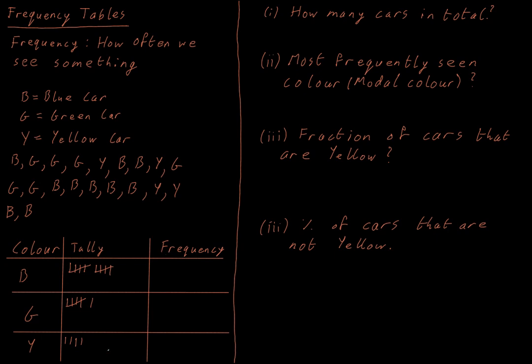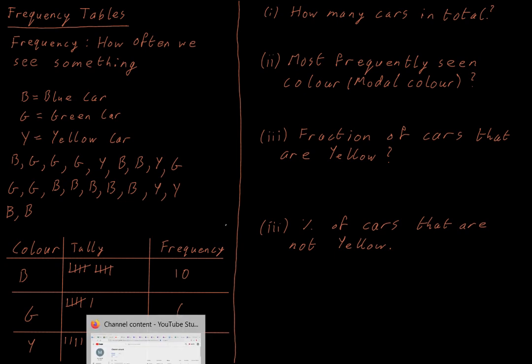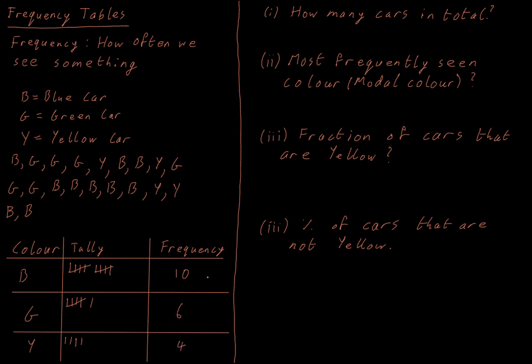So now I have gone through all of my list and I have tallied up all of the colors that I got. But now I don't want to be dealing with these groups of five. I actually want to just write these as normal numbers. So here I have five and five is 10. So in total, I saw 10 blue cars and I have a group of five and one is six green cars. And I just have my four sticks so there's nothing complicated there. That's just four. So I have my frequency table now completed. I know I saw 10 blue cars, six green cars, and four yellow cars. And that's how I complete my frequency tables.